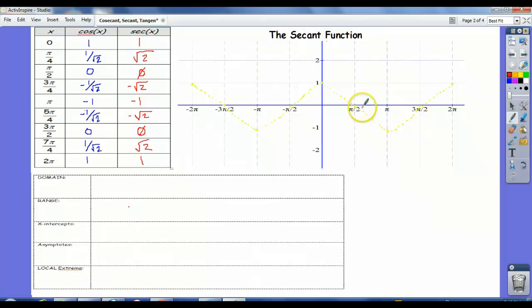Okay, now like we do with cosecant, we're going to note that whenever cosine is 0, for instance at pi over 2, there's going to be an asymptote for secant, because secant is undefined when cosine is 0. So I'm going to put my vertical asymptotes in these locations.